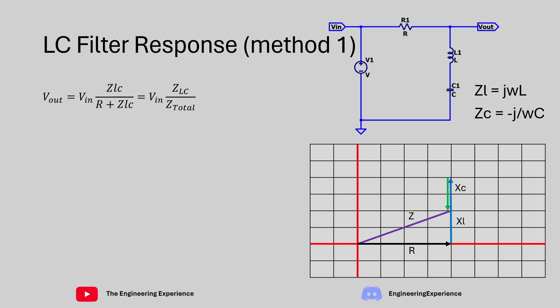So on the screen now you've got a phasor diagram for this circuit. You basically have the real components on this axis and you have the imaginary components on this axis. So in this case we have got two imaginary components which is the j omega L for the inductor and the minus j over omega C for the capacitor.